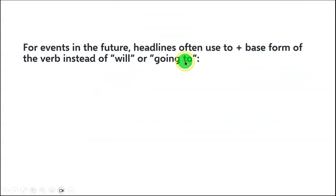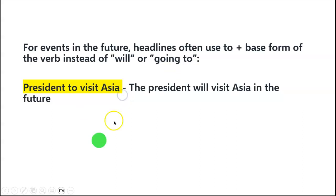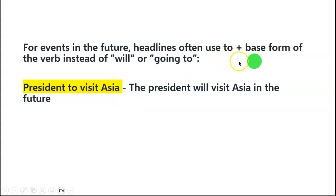For events in the future, headlines often use 'to' plus the base form of the verb instead of 'will' or 'going to'. If you are at the beginner level learning simple future tense, you are told to use 'will' or 'going to'. But newspapers use a different form. For example: 'President to visit Asia.' The correct version is 'The president will visit Asia.' They use 'to + base verb' because using 'will' or 'going to' would make the sentence very long.